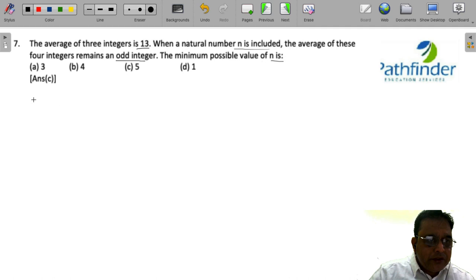Now, this is a simple question really. If the average of 3 numbers is 13, the sum must be 13 multiplied by 3. And let us say the 3 numbers are a, b and c. So, a plus b plus c is equal to 39.